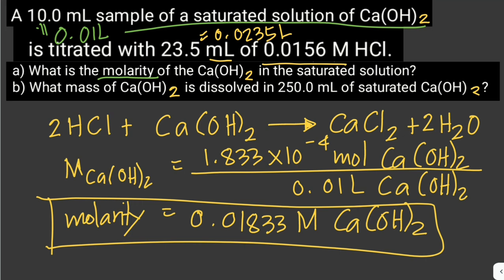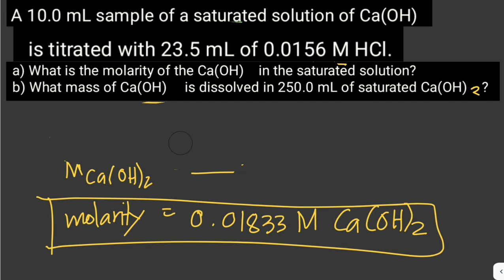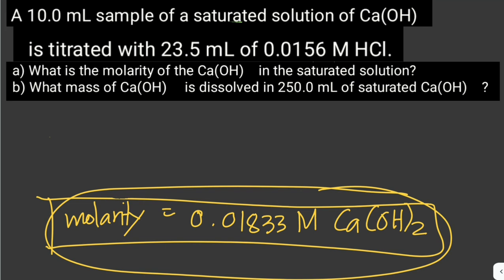Now we answer the second question: what mass of calcium hydroxide is dissolved in 250 mL of saturated calcium hydroxide? We need to solve for the mass in grams. We can use the molarity that we got from question A to solve for the number of moles of calcium hydroxide first, using the given volume of 250 mL, which converts to 0.25 liter.